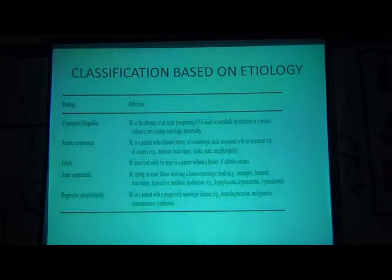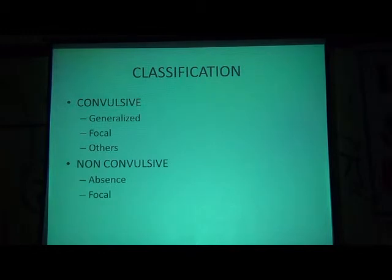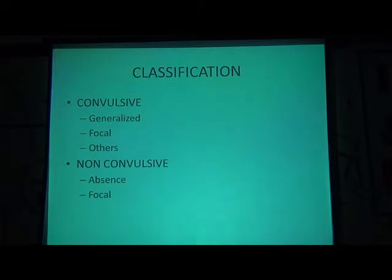This is the classification of status epilepticus based on etiology: cryptogenic, remote symptomatic, febrile, acute symptomatic, and progressive encephalopathy. The classification of status epilepticus by type is convulsive and non-convulsive. Under convulsive: generalized, focal, and others. Under non-convulsive: absence seizures and focal.